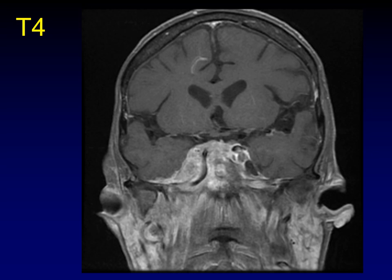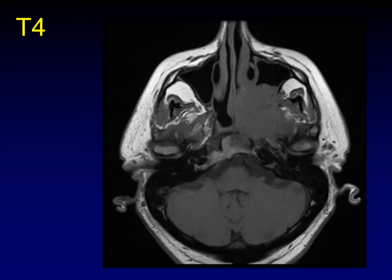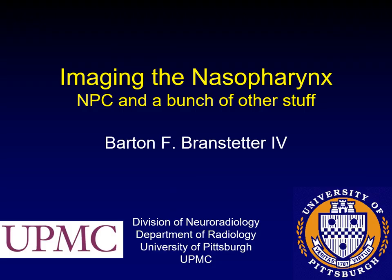A more dramatic example shows Meckel's Cave completely filled, the cavernous sinus completely filled, and extension along the dura and floor of the middle cranial fossa. Another example of advanced disease shows extension through the paranasal sinuses and out laterally into the infratemporal fossa — extension to distant soft tissues, T4 disease. This concludes part one of the lecture on imaging of the nasopharynx.